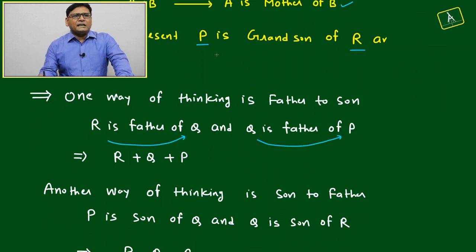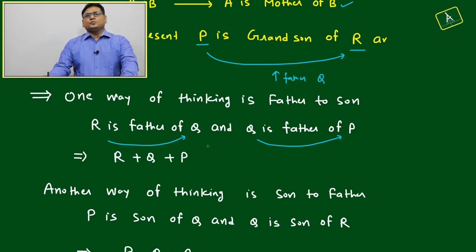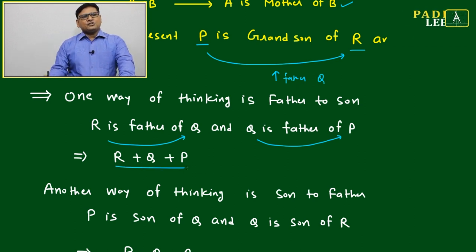Now to break this relation: P to R is grandson. We insert the father, who is Q, giving us: R plus Q plus P.